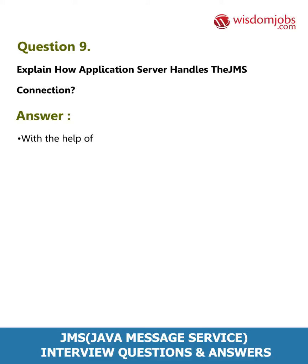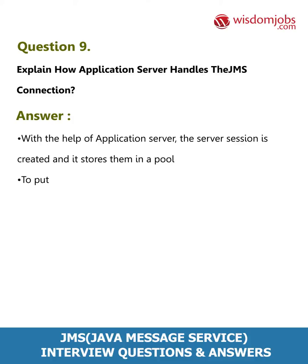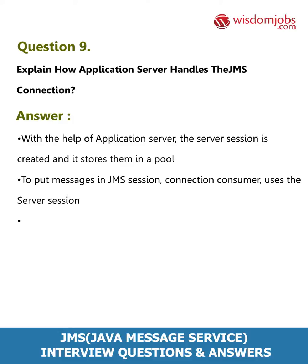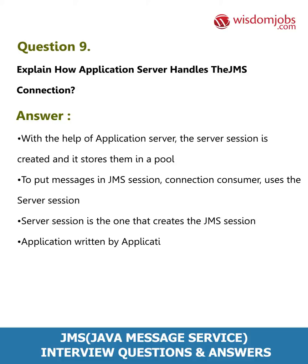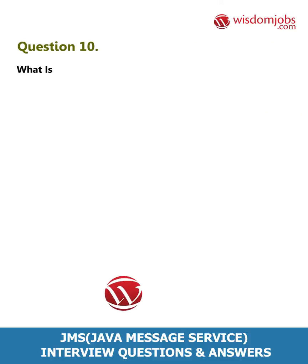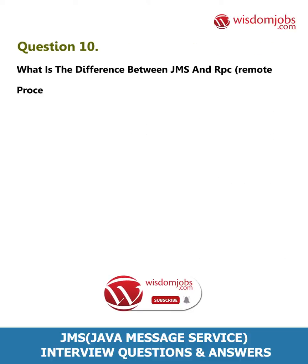Question 9: Explain how an application server handles the JMS connection. Answer: With the help of the application server, the server session is created and stored in a pool. To put messages in a JMS session, the connection consumer uses the server session. The server session is the one that creates the JMS session. The application written by application programmers creates the message listener.